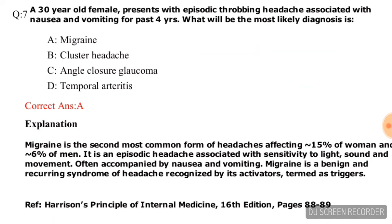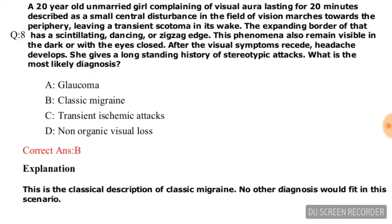Question number seven: A 30-year-old female presents with episodic throbbing headache associated with nausea and vomiting for the past four years. What is the most likely diagnosis? Options are migraine, cluster headache, angle closure glaucoma, and temporal arteritis. The correct answer is migraine, that is option number A.